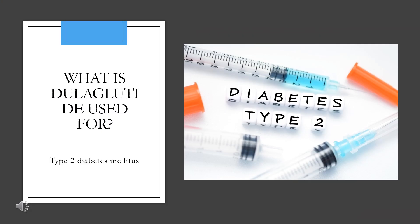What is dulaglutide used for? Dulaglutide is indicated as an adjunct to diet and exercise to improve glycemic control in adults and pediatric patients greater than or equal to 10 years of age with type 2 diabetes mellitus. It is also indicated to reduce the risk of major adverse cardiovascular events in adults with type 2 diabetes mellitus who have established cardiovascular disease or multiple cardiovascular risk factors.